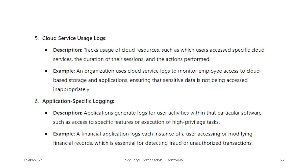Cloud service usage logs track usage of cloud resources, such as which users access specific cloud services, the duration of their sessions, and the actions performed. For example, an organization uses cloud service logs to monitor employee access to cloud-based storage and applications, ensuring that sensitive data is not being accessed inappropriately. Application-specific logging is where almost all applications generate logs for user activities within that particular software, such as access to specific features or execution of high-privileged tasks. For example, a financial application logs each instance of a user accessing or modifying financial records, which is essential for detecting fraud or unauthorized transactions.